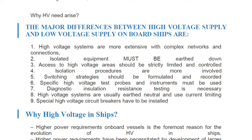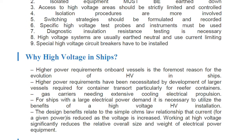The major differences between high voltage and low voltage supply on board ships are: HV systems are more extensive with complex networks and connections; isolated equipment must be earthed down; access to high voltage areas should be strictly limited and controlled; isolation procedures are more involved; switching strategies should be formulated and recorded; specific high voltage test probes and instruments must be used; diagnostic insulation resistance testing is necessary; high voltage systems are usually earth neutral and use current limiting; and special high voltage circuit breakers have to be installed.